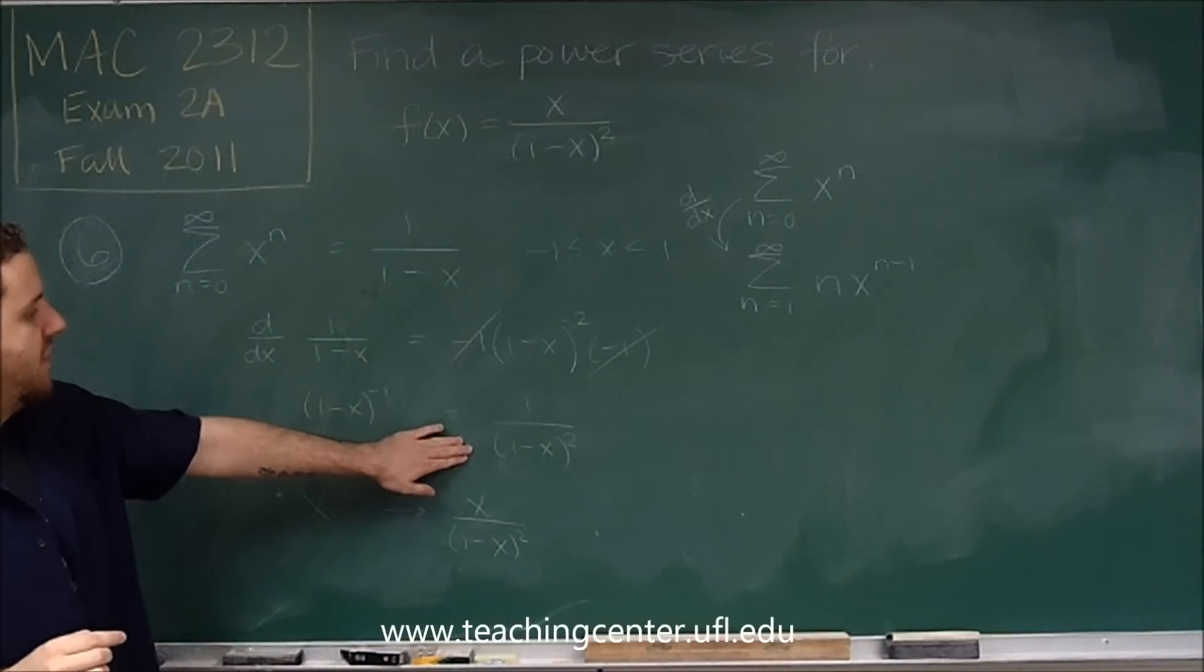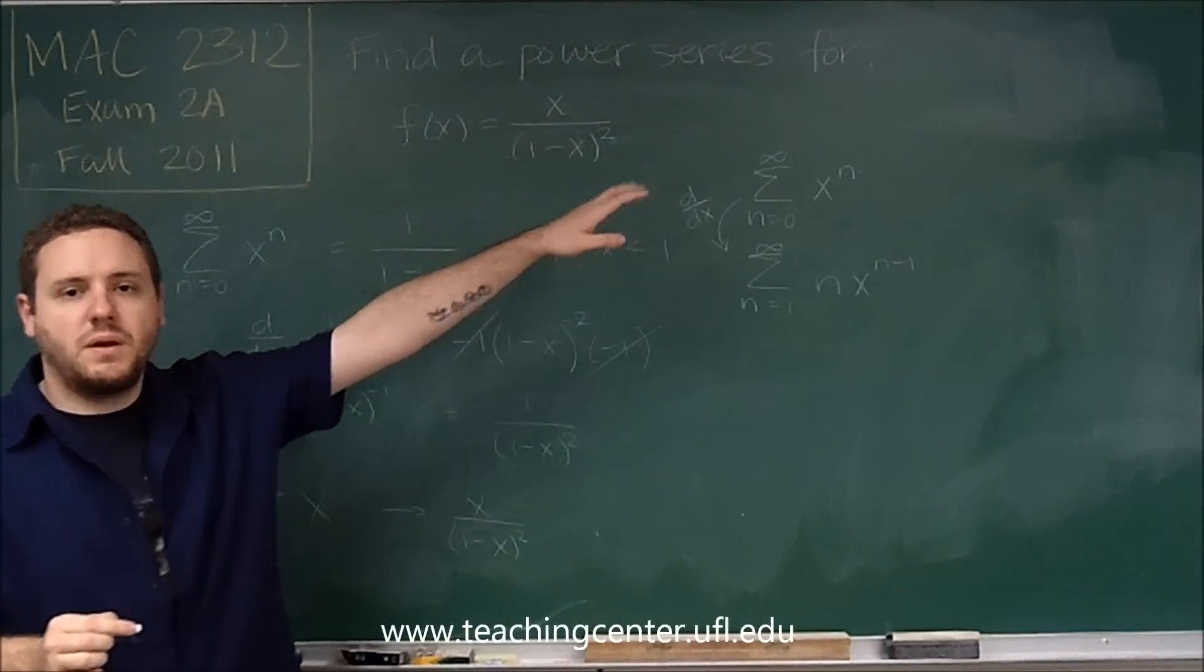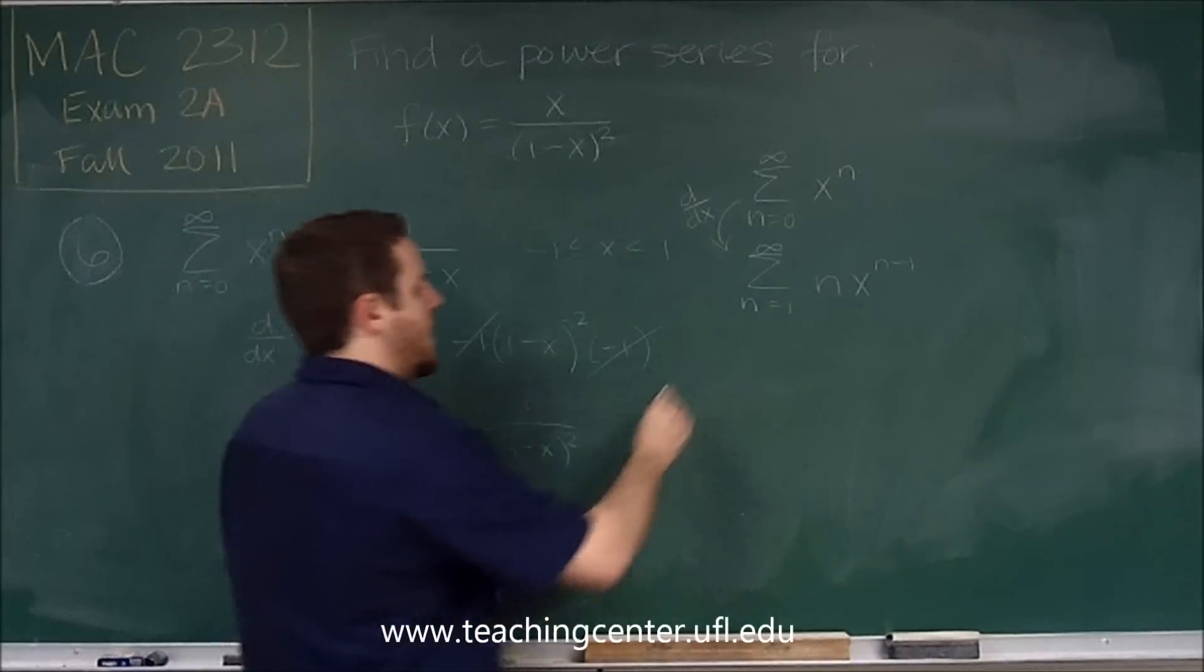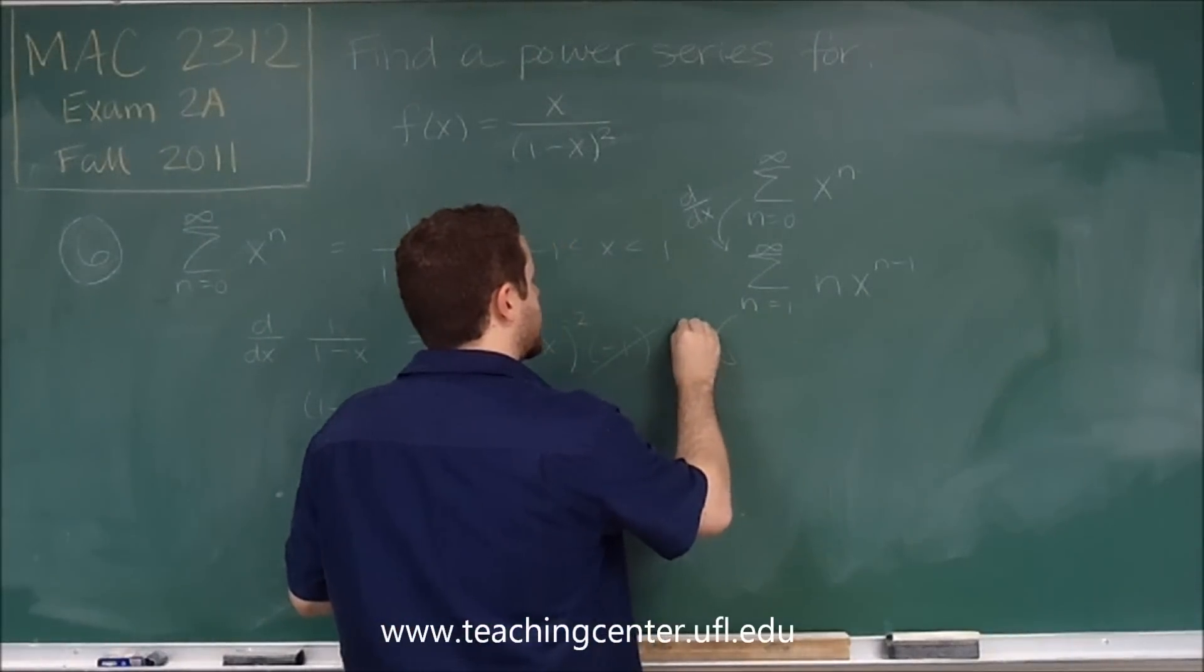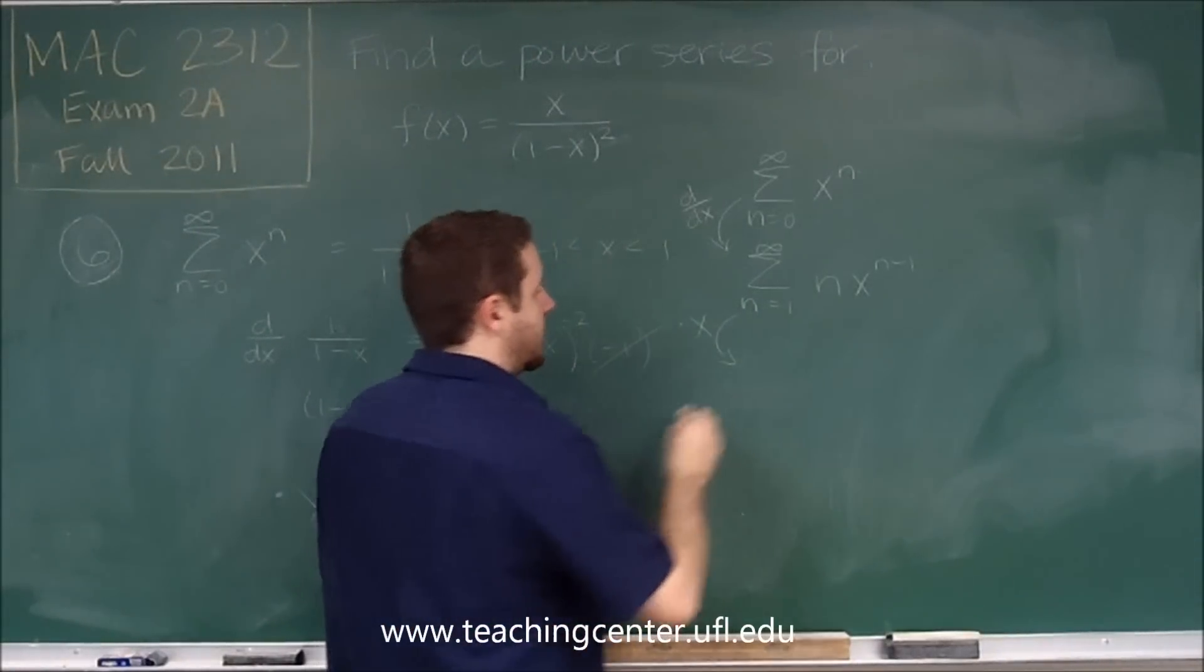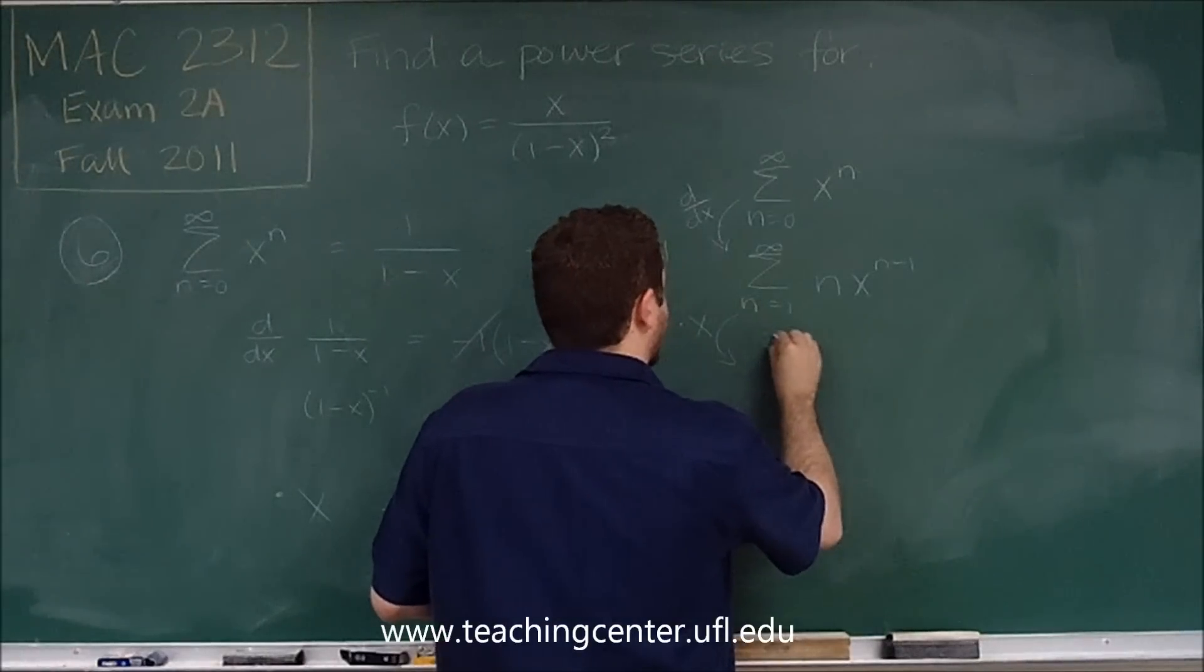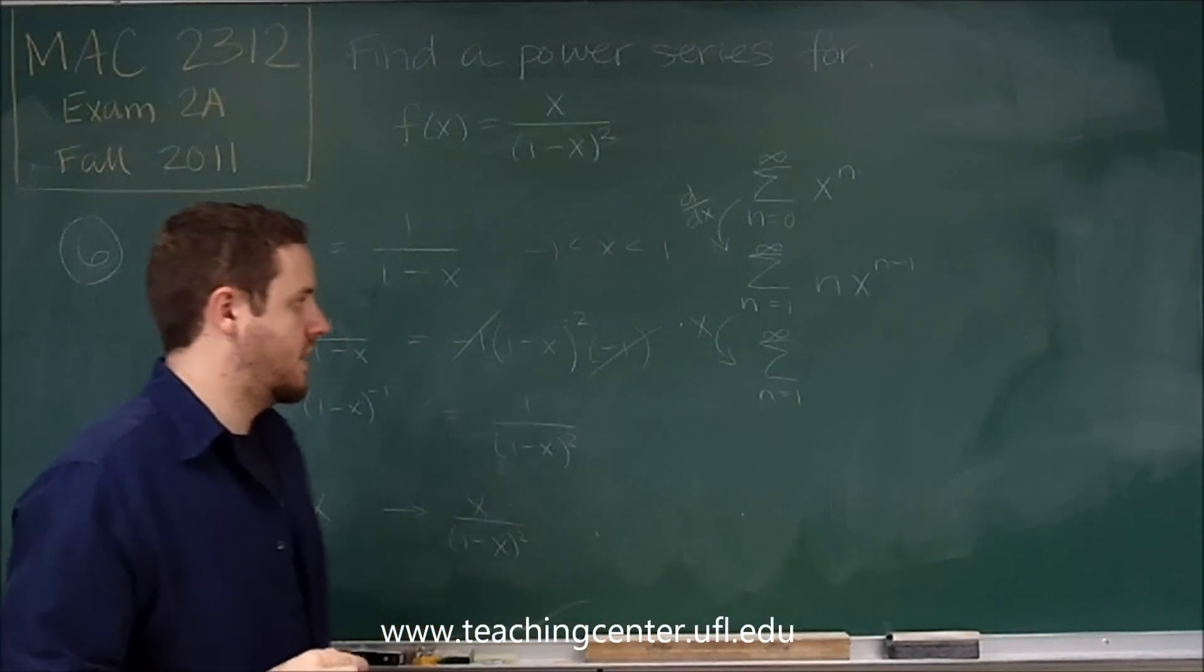So once we got the derivative, we got to here, and then we saw we needed to multiply by x. So all you need to do is multiply this by x. So the next step is just multiply by x. That wouldn't change anything about the series bounds or anything like that.